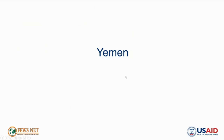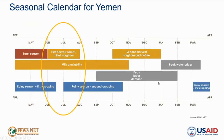Turning to our analysis for Yemen, this is FEWS NET's seasonal calendar for Yemen. Though there is significant variability in seasonality across regions, the first harvest of cereals has recently concluded in many rural areas, and in June the first rainy season has also concluded across most of the country. Most of June is considered a dry period and marks the onset of the agricultural off-season in the lowlands, when access to food and income becomes relatively scarce.